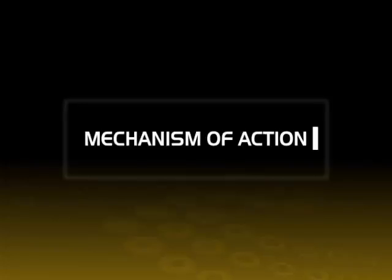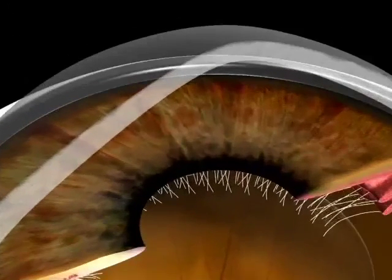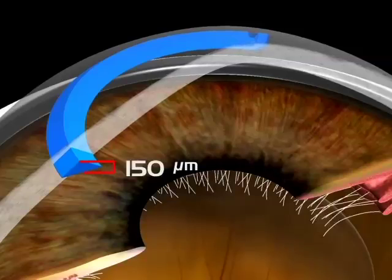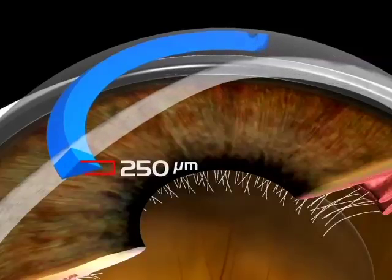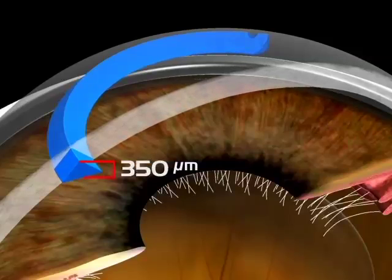Mechanisms of action. Cararing acts upon the cornea through five different mechanisms. Corneal flattening: Cararing implantation is an additive technique that causes corneal flattening, reducing the cone-like shape. Cararing spares the central cornea and the tissue's integrity.